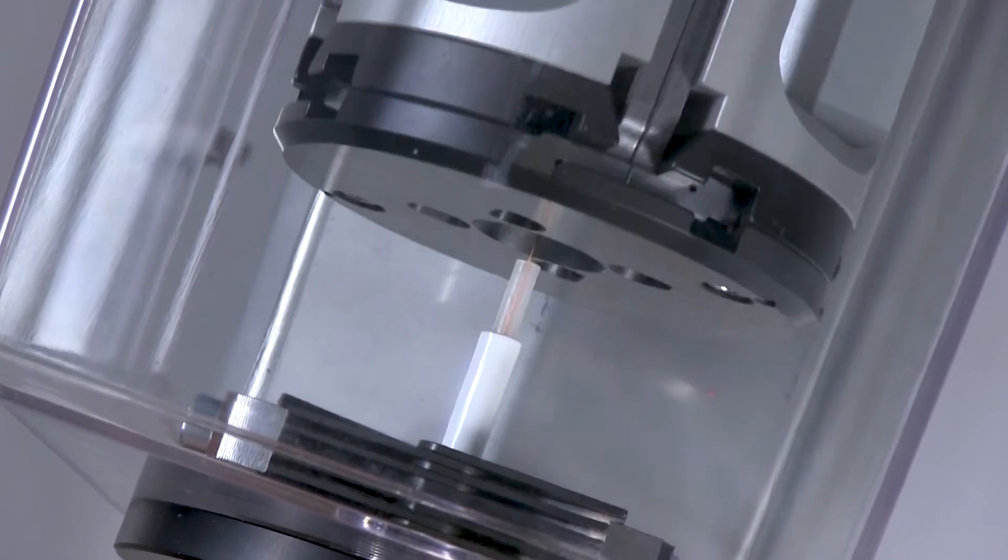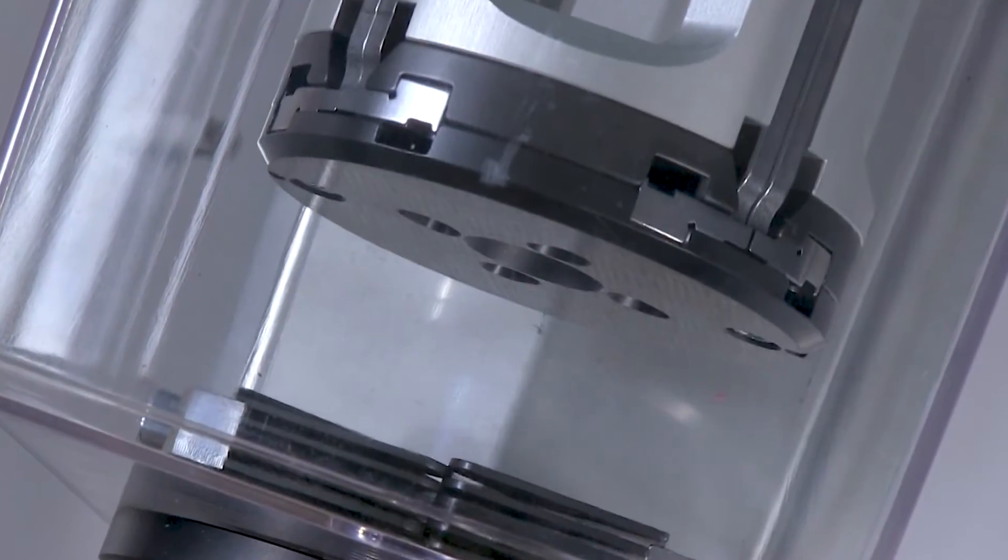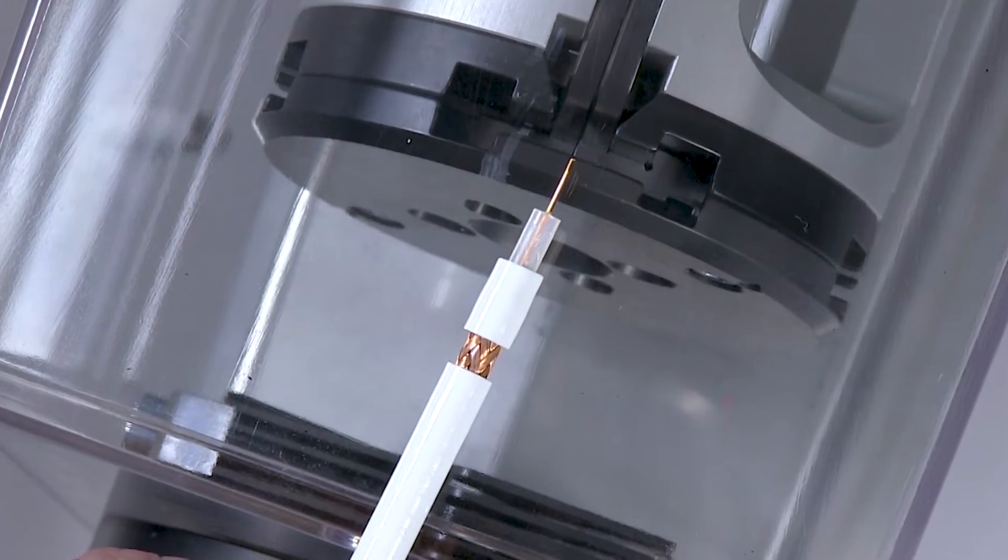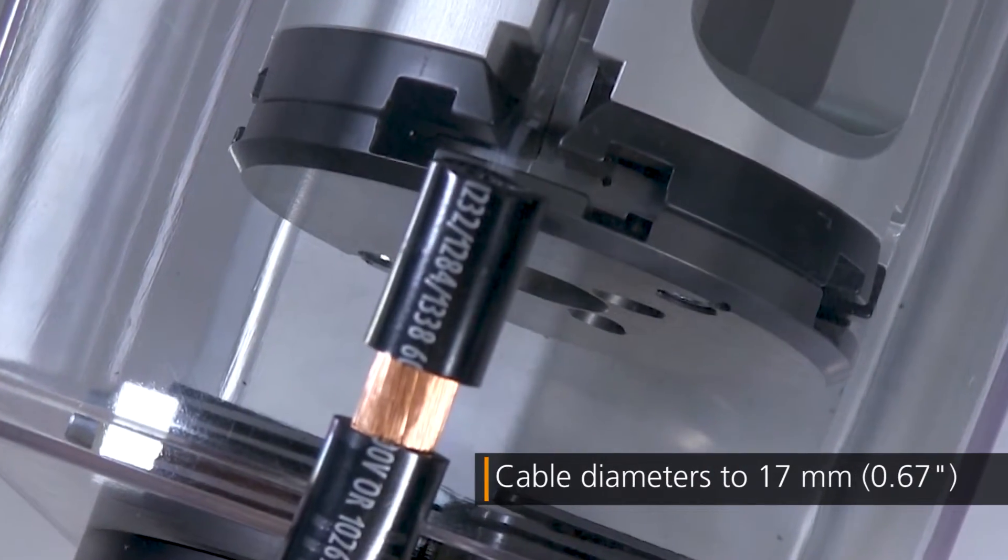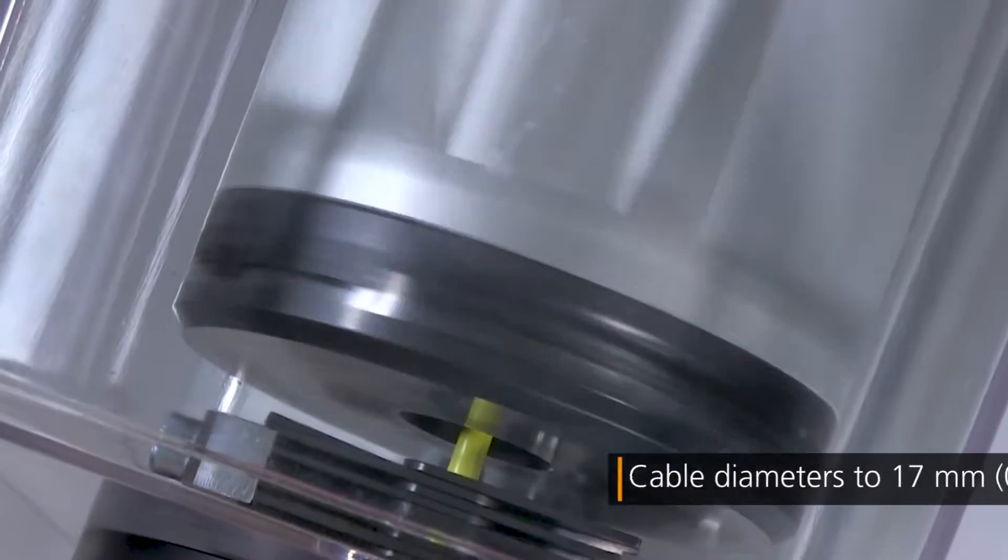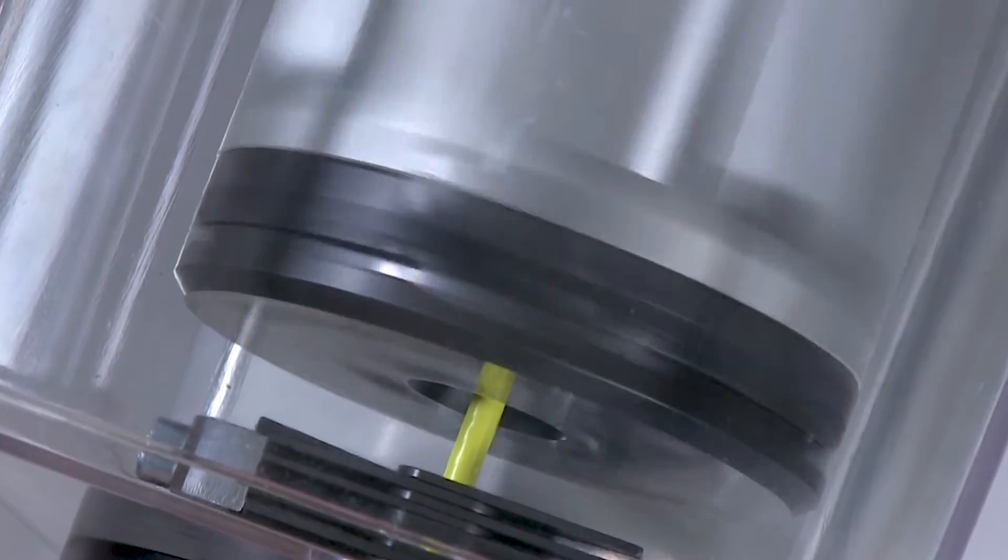The Coax Strip 6580 is one of the latest generation of coaxial cable stripping machines available from Schleuniger and delivers excellent performance and functionality for an extremely wide processing range.